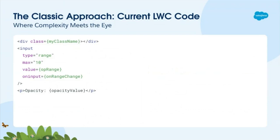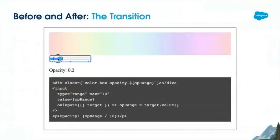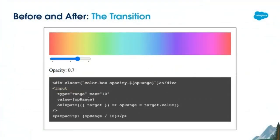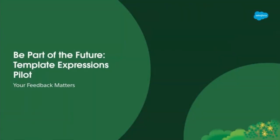Notice how the arrow function is used right on the onInput method, or how the class name is a single template string. When I have the opacity range being changed, I change the opacity and capture everything in real time without any logic being added to my LWC class. We are launching a pilot program for template expressions in Winter 24 — we'd love to have you on board. Your insights are crucial for refining this feature, so if you're interested, let's talk.